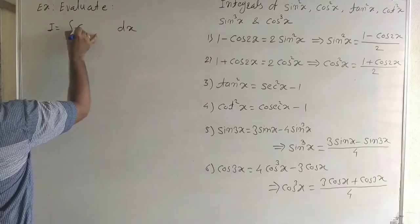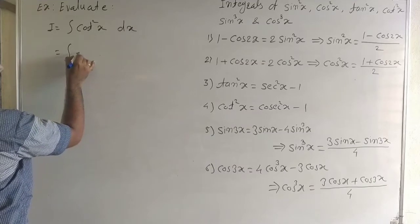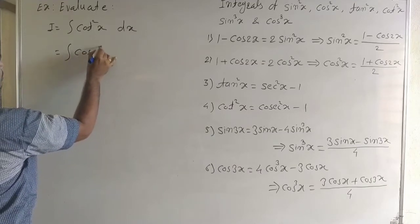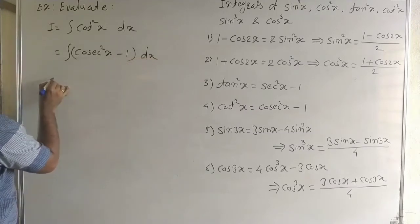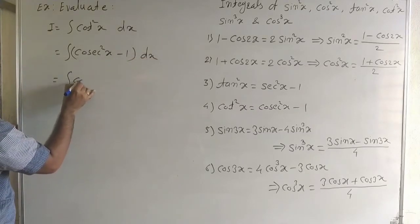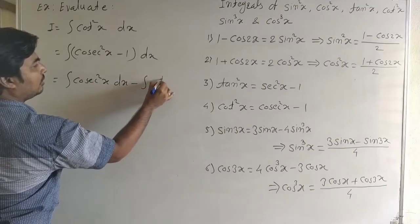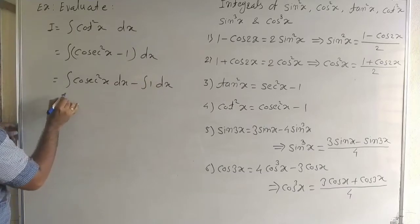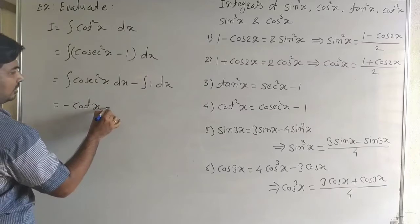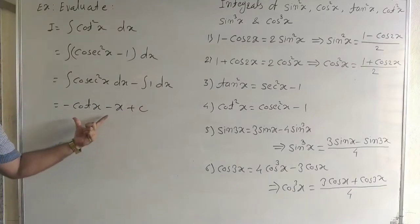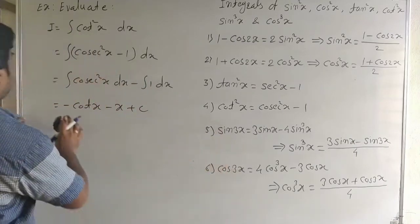Similarly, for the integral of cot²x dx: use cot²x = cosec²x − 1. Separating: ∫cosec²x dx − ∫1 dx. The integral of cosec²x is the standard form, giving −cot x − x + C. This is the integral of cot²x.